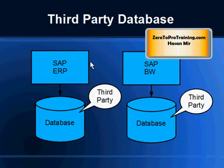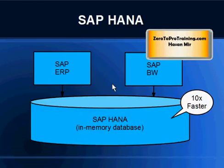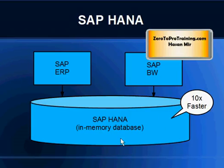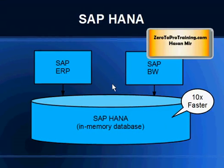SAP HANA addressed all these challenges. SAP created SAP HANA, an in-memory database. An in-memory database keeps almost all the data in memory, not on the hard disk — so disk spinning is out of the equation and retrieval is much faster. Customers have reported five to seven times better performance after implementing SAP HANA, and in theory it could be ten times faster.